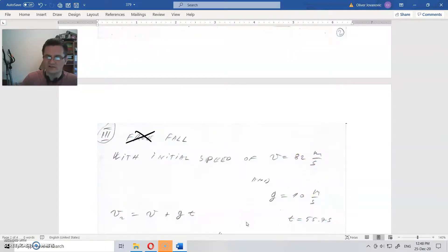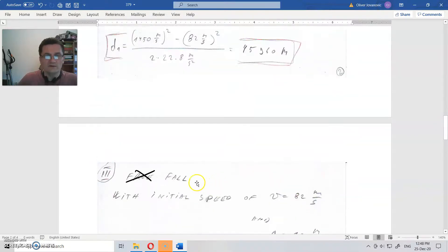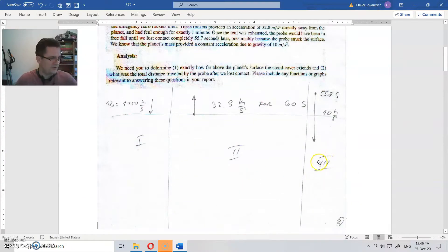And gravitational acceleration is 10 meters per second squared. Then you will calculate the things that you need to calculate for the third part of this assignment.